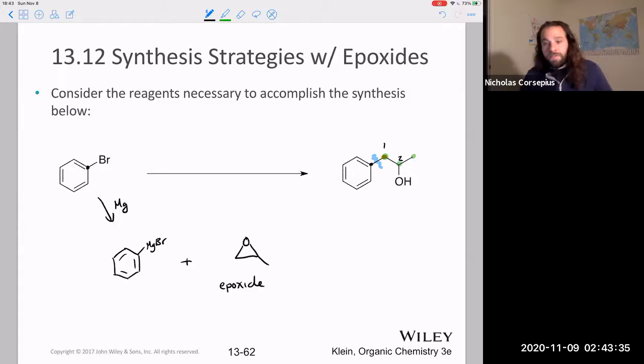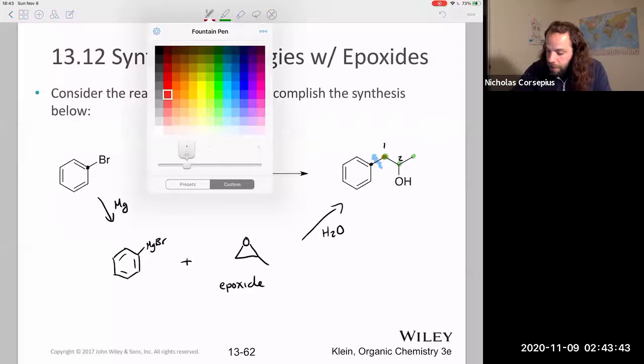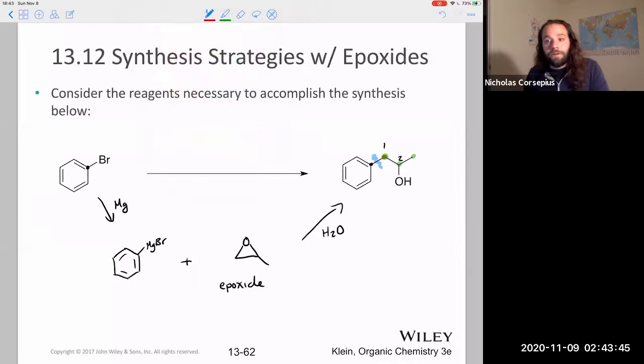And just to convince ourselves that this is indeed the product I would get in this reaction, I'd have to treat it with water afterwards, but yes, because which carbon is my Grignard going to attack? It's going to be that SN2 type reaction. So it wants to hit that less sterically hindered carbon. So indeed, I'm going to get substitution on that first carbon there, not that more sterically hindered carbon.